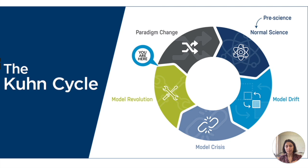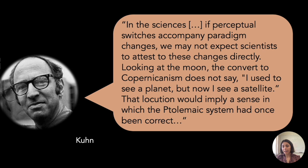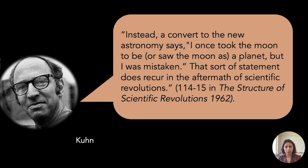Kuhn writes: 'In the sciences, if perceptual switches accompany paradigm changes, we may not expect scientists to attest to these changes directly. Looking at the moon, the convert to Copernicanism does not say, I used to see a planet, but now I see a satellite — that would imply the Ptolemaic system had once been correct.' Instead, a convert to the new astronomy says, 'I once took the moon to be a planet, but I was mistaken.' That sort of statement recurs in the aftermath of scientific revolutions.